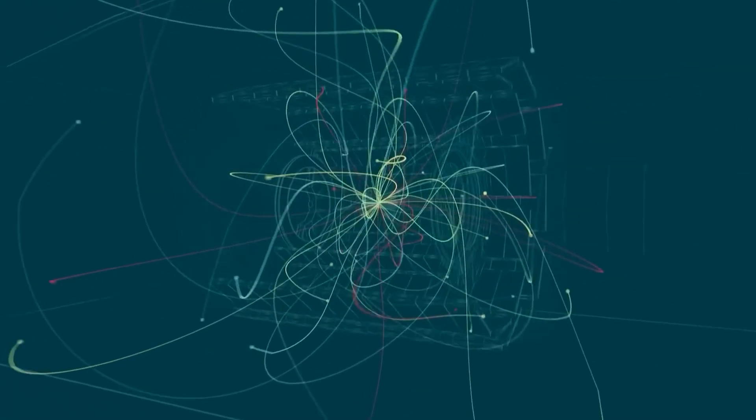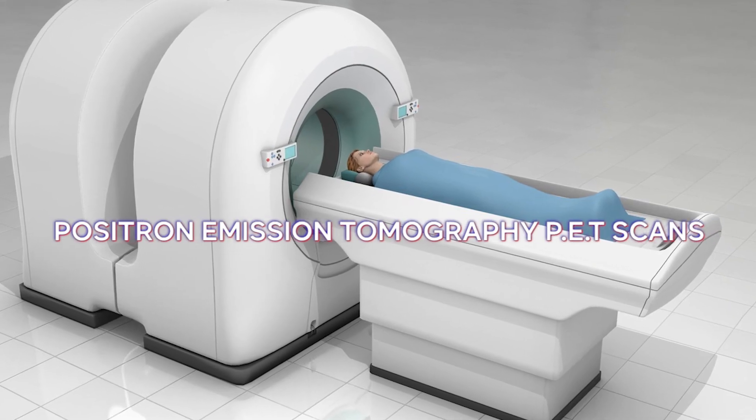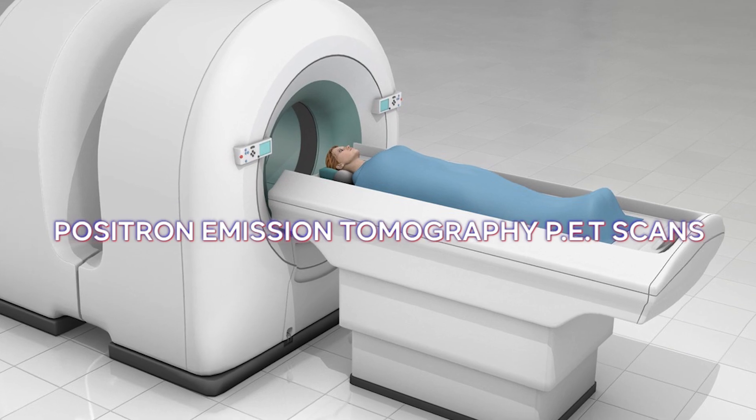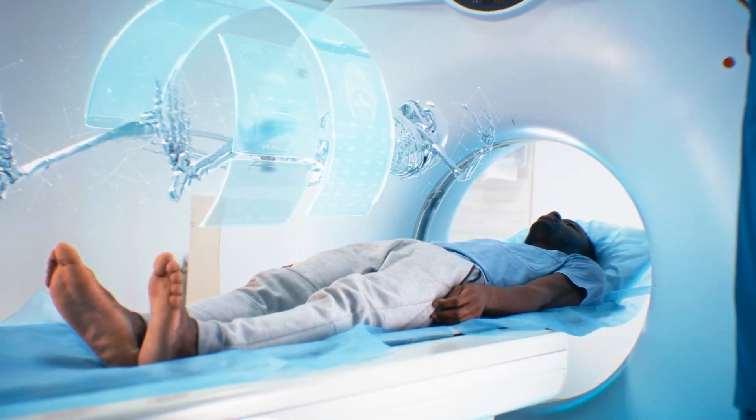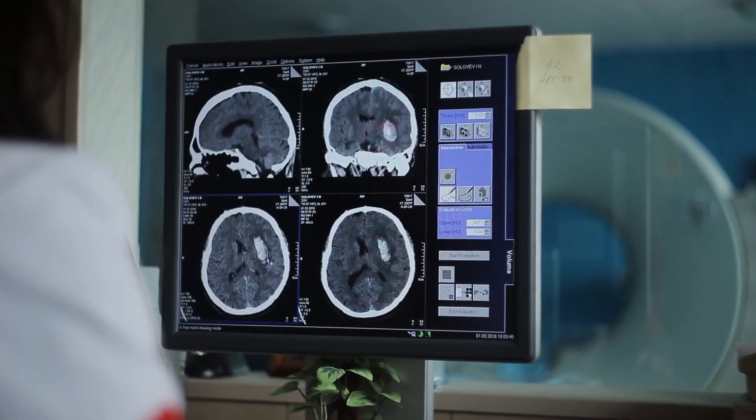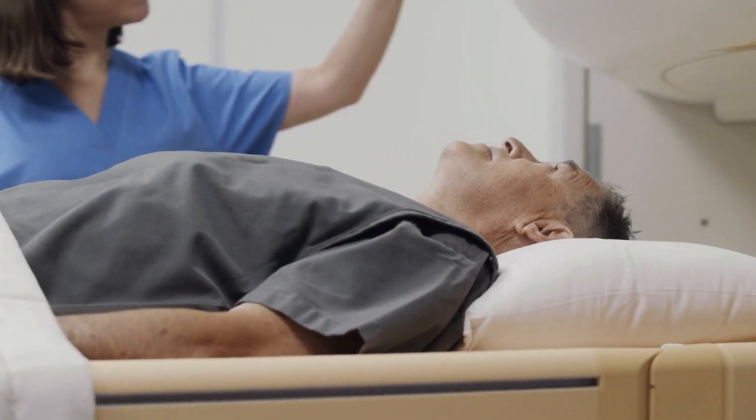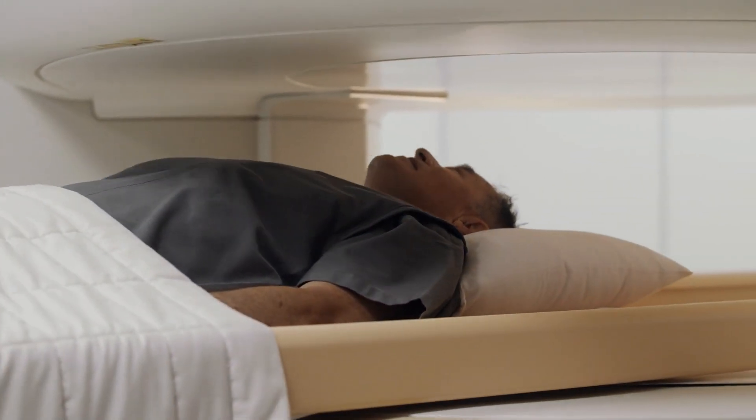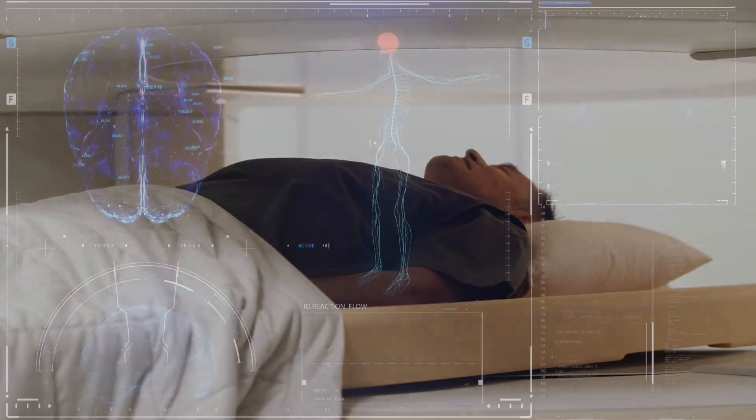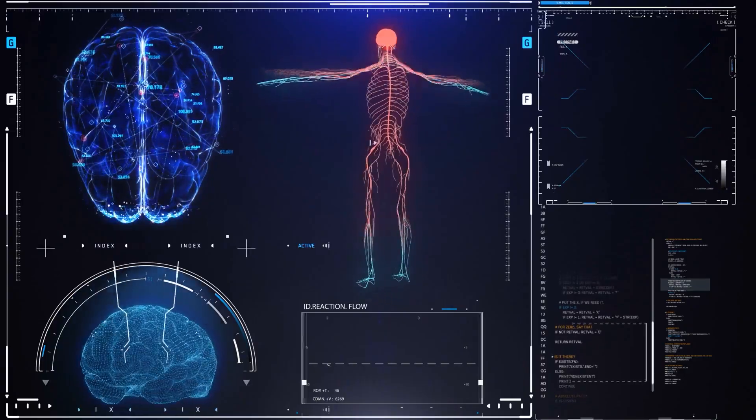Beyond theoretical interest, antimatter also serves practical purposes. Positron emission tomography scans, a crucial medical imaging technique for detecting tumors, rely on the emission of positrons from radioactive sugars that accumulate at tumor sites. The interaction between positrons and electrons in the patient's body produces energy that specialized equipment can map, providing detailed images of internal structures.